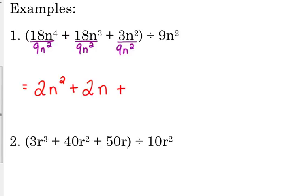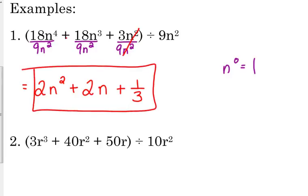Bring down that plus, 3 divided by 9, excuse me, doesn't go evenly, but we can reduce that to 1/3. You can use your calculator if you need to. And n squared over n squared, those cancel. 2 minus 2 is 0, anything to the 0 power is 1. n to the 0 equals 1. Anything to the 0 is 1. So that's the answer.